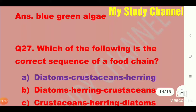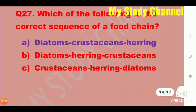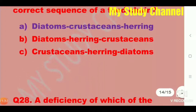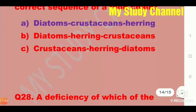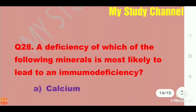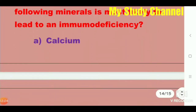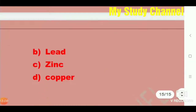Next question: Which of the following is the correct sequence of the food chain? Option A is the right answer — that is diatoms, crustaceans, and herring. Next question: A deficiency of which of the following minerals is most likely to lead to immunodeficiency? The answer is option A — that is calcium.